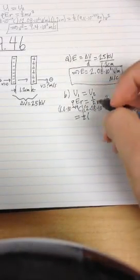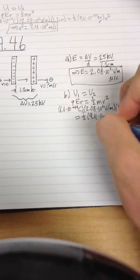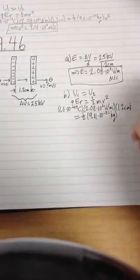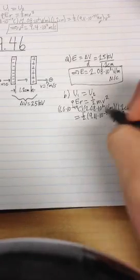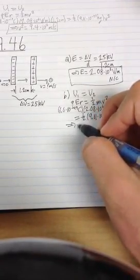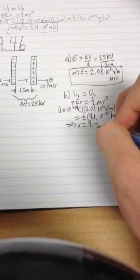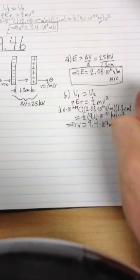The mass of an electron is 9.11 times 10 to the negative 31st kilograms, and then our v squared that we're trying to find, which means that v equals 9.4 times 10 to the 7th meters per second.